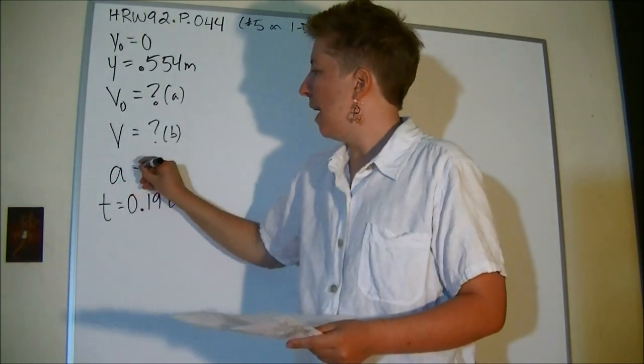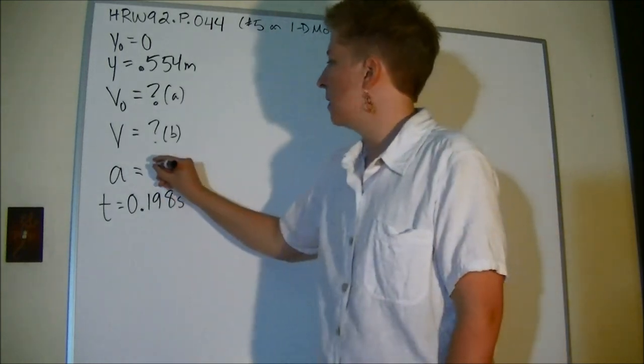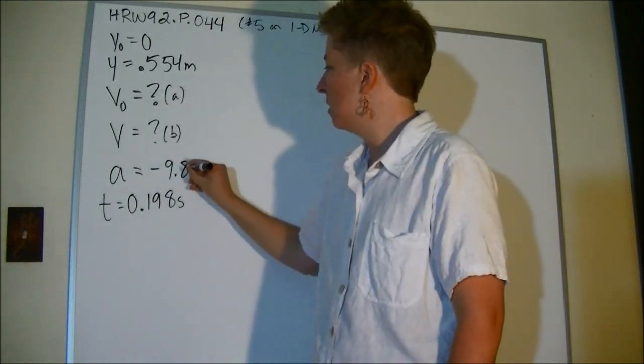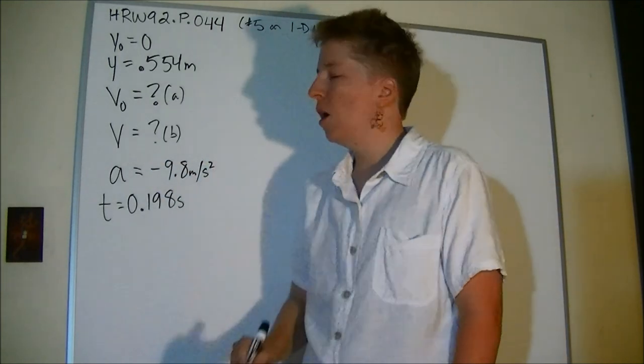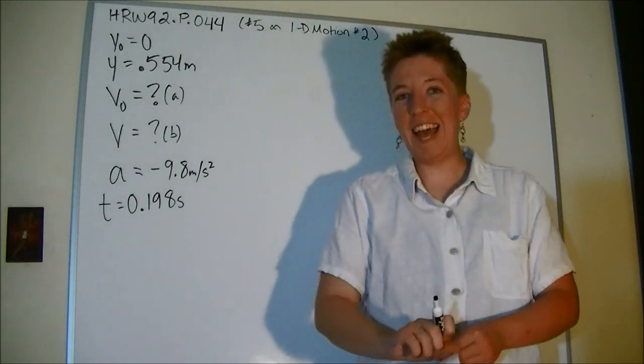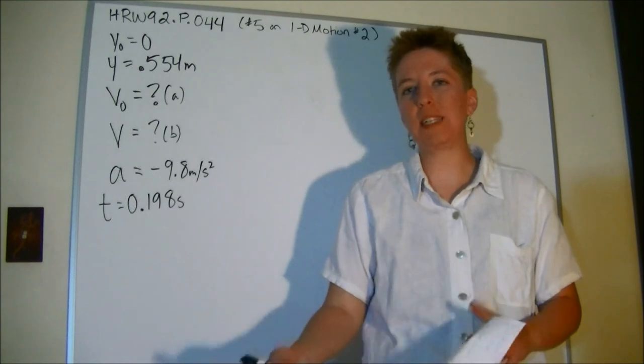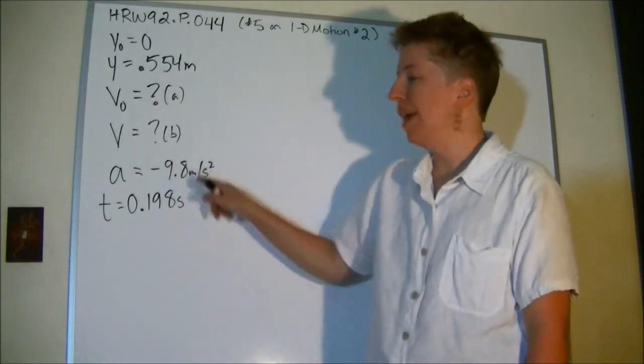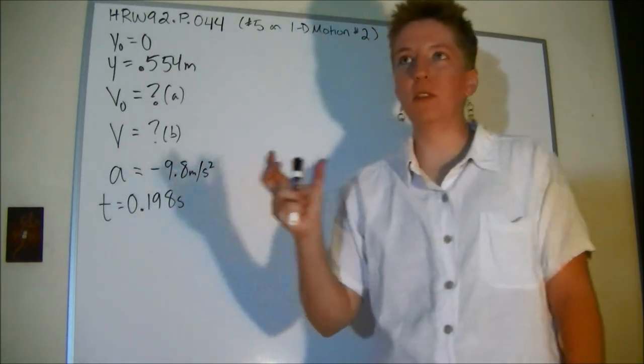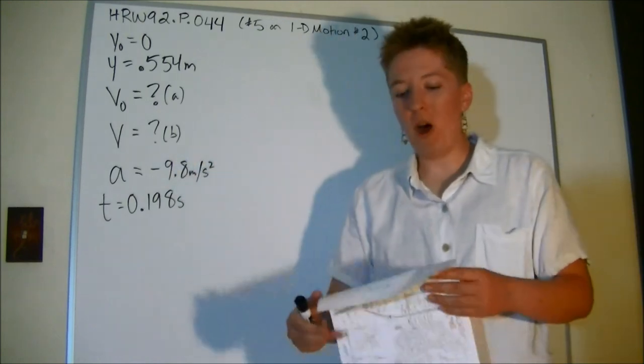And the acceleration is gravity, so that's going to be negative 9.8 meters per second squared. Notice that although you can use 10 meters per second squared on the AP test, for WebAssign to accept your answer you're probably going to have to use 9.8 or you'll be outside the range of possible answers.